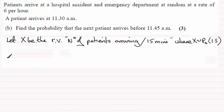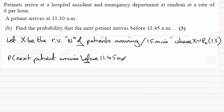So to work out then the probability that the next patient arrives before 11:45 a.m., that's going to be equal to the probability that X is greater than or equal to 1 and that's going to be equal to 1 minus the probability of X equaling 0.